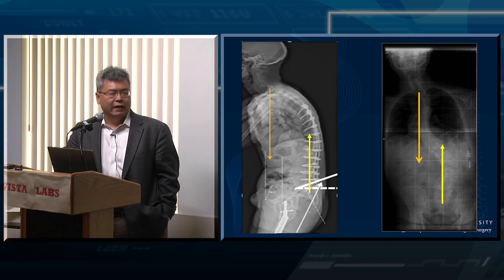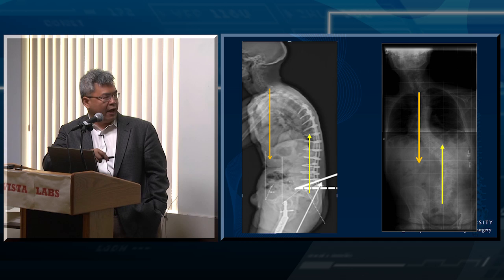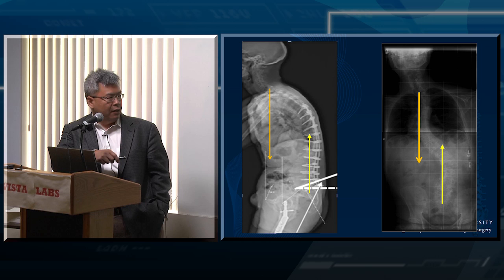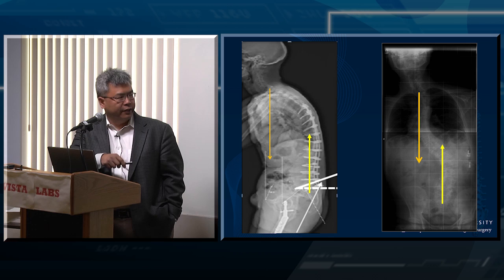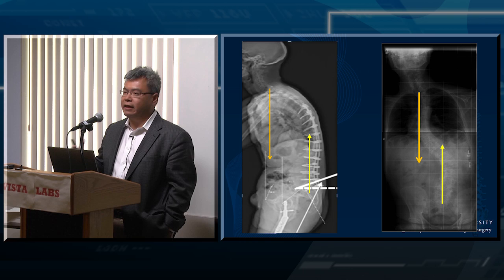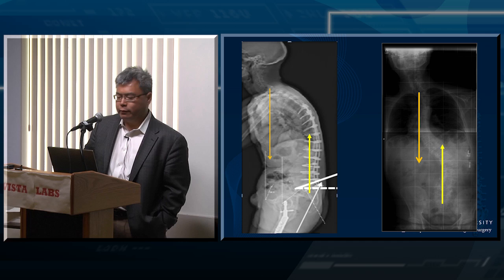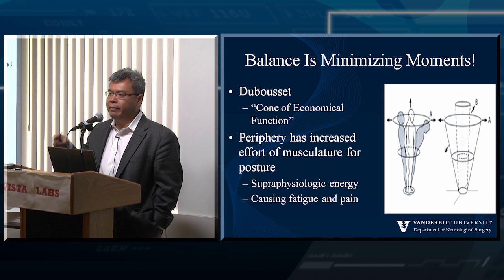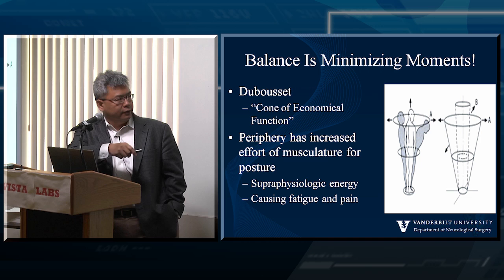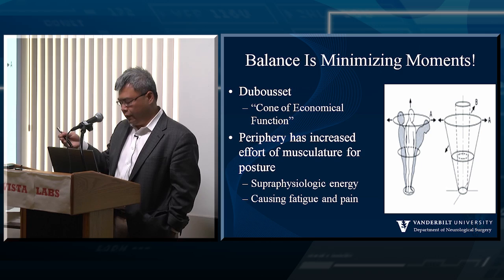That's all we're doing in deformity — spinal deformity, in my mind, is nothing more than lining up force vectors. If someone has a positive sagittal balance, their center of gravity is pulling down, the equal and opposite reaction force is coming up but it's separated — all we're trying to do is get this line over this line so it's zero. When someone has a significant truncal shift with coronal imbalance, all we're doing is lining up their body weight over the equal and opposite reaction so they can mitigate the forces. That's all we're really doing — mitigating moments in spinal deformity surgery. The whole idea of Dubousset's cone of economical function is about minimizing loads and minimizing moment arms.